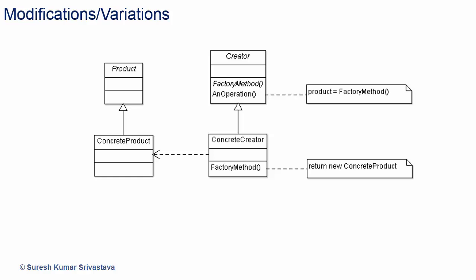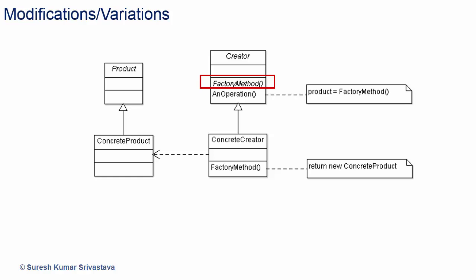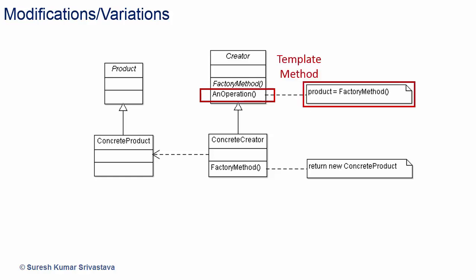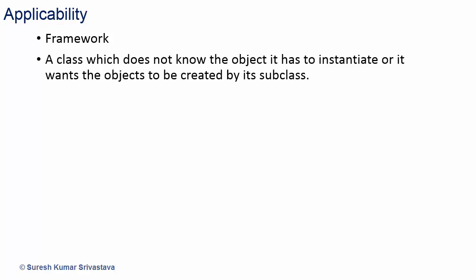Let's see some modifications and variations. Creator can have a default implementation. Factory method can have input parameters and based on that it can create objects. There may also be some language-specific variations. Generally, a template method will have a factory method — here an operation is a template method. Where it can be applicable: obviously in a framework scenario as discussed, or in libraries too. A class which does not know the object it has to instantiate, or that wants objects to be created by its subclasses. Also, there may be cases of parallel class hierarchies where it can be useful.